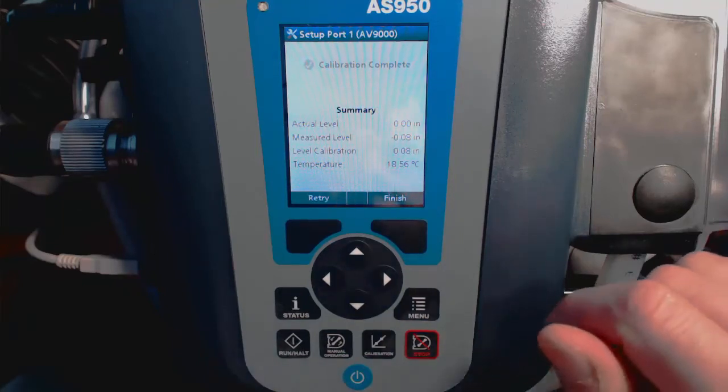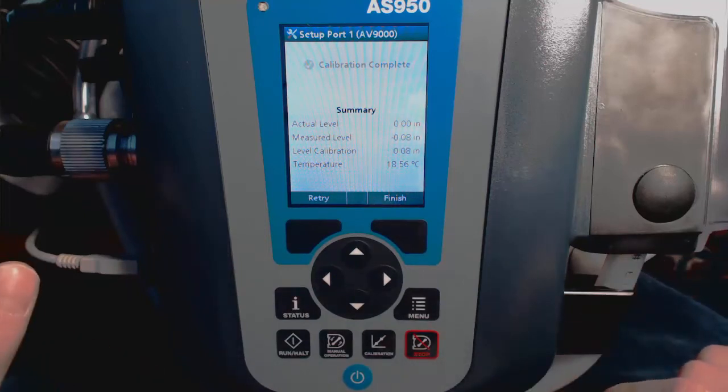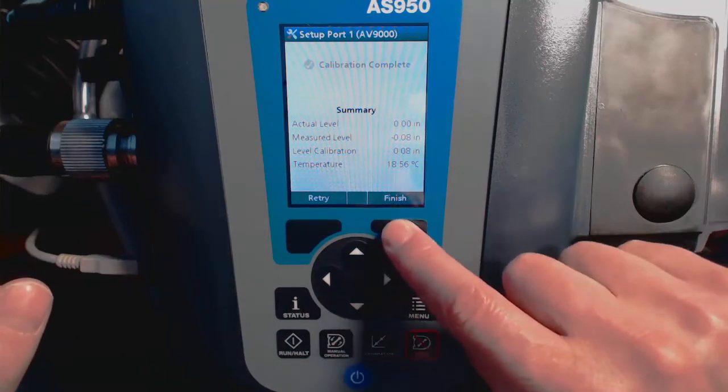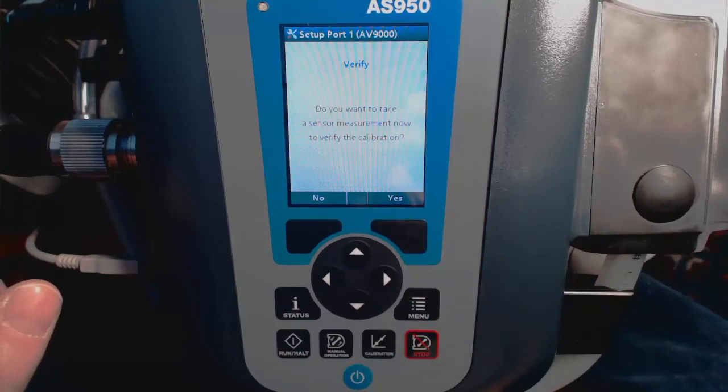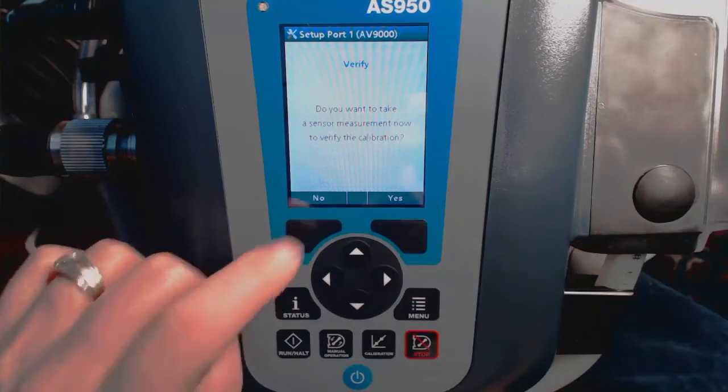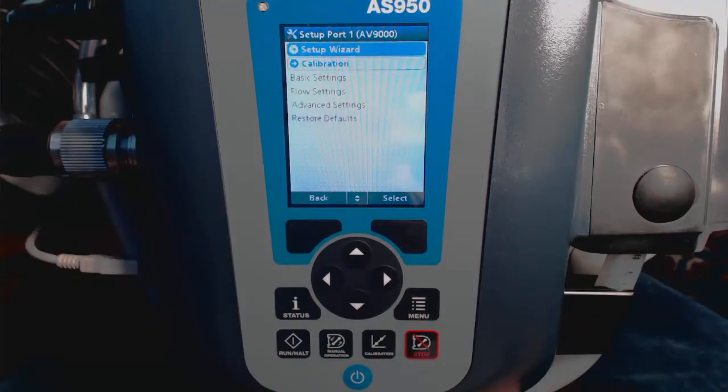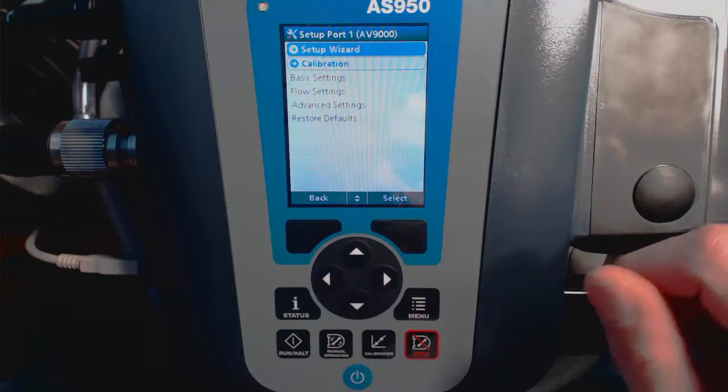A successful calibration will be indicated by the green checkbox in the top line on the display. Select Finish, then you have a chance to verify the calibration. I've selected No here. That wraps up our Setup Wizard.